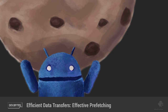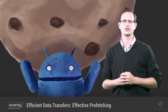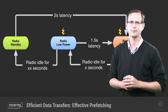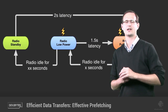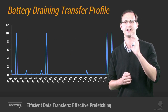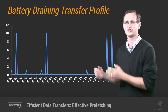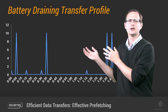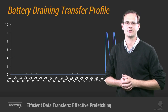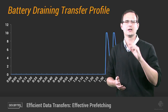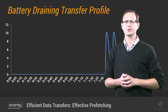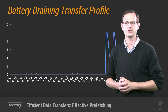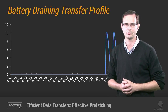In previous Efficient Data Transfers DevBytes, I looked at the cell radio state machine and examined ways to analyze apps' data transfer profiles to uncover anti-patterns, such as short intermittent peaks and consecutive but non-overlapping downloads. Having discovered potential problems, in this episode I'll look at how to use prefetching to solve some of them.